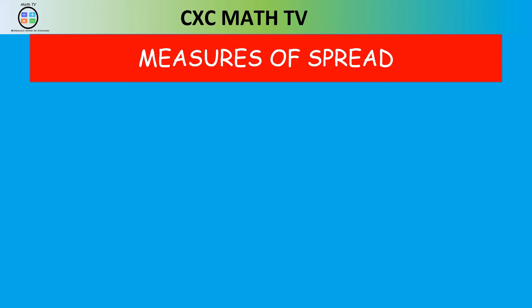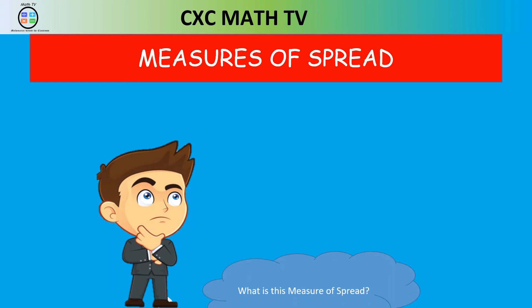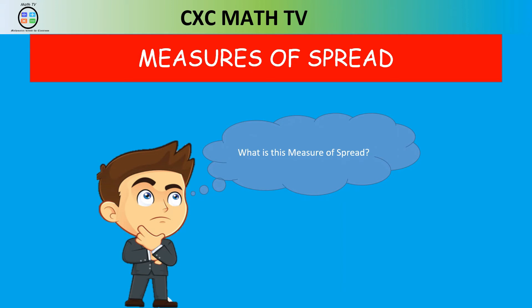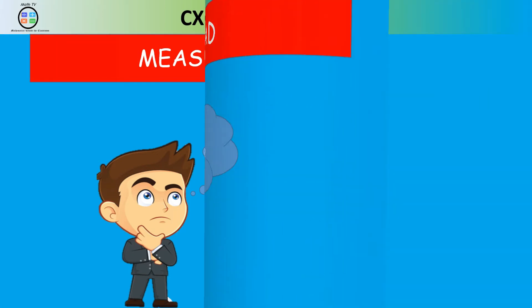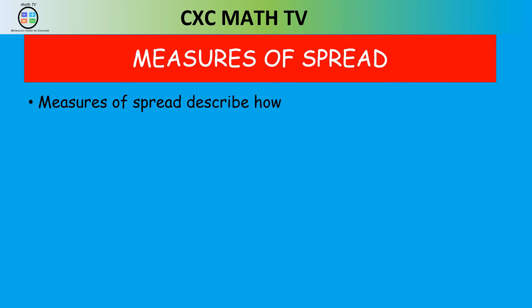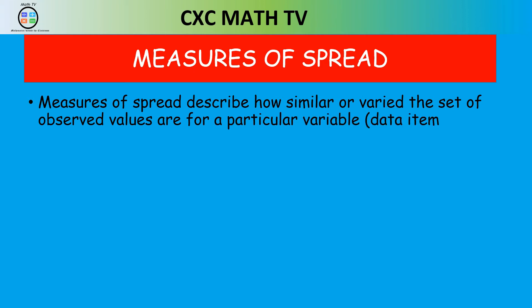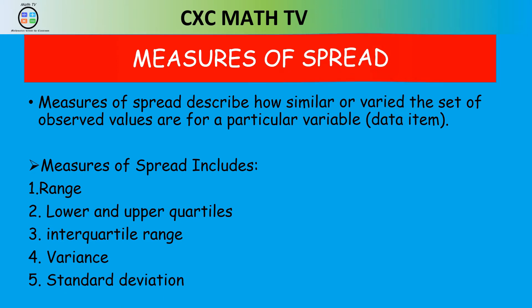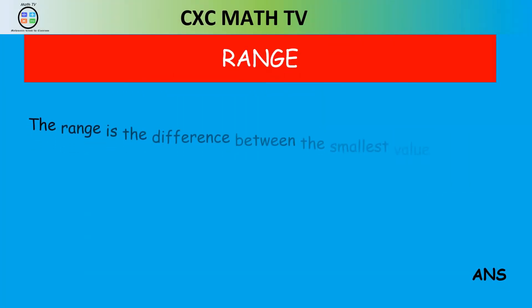We already know measures of central tendency from CSEC and even prep school. Now here's something new: measures of spread. Measures of spread describe how similar or how varied a set of observed values are. They include range, lower and upper quartile, interquartile range, variance, and standard deviation.